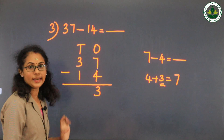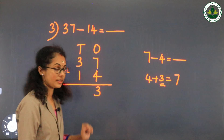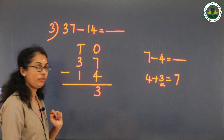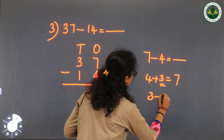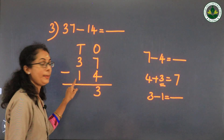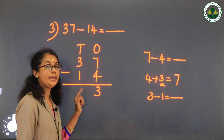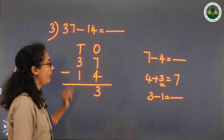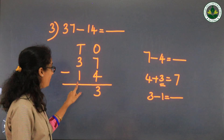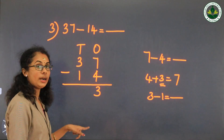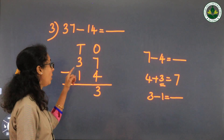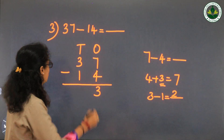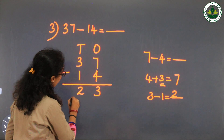Next, digits in the tens place: 3 and 1. 3 minus 1: check 1 plus 1 equals 2, 1 plus 2 equals 3, so 3 minus 1 equals 2. Write that 2 in the tens column.